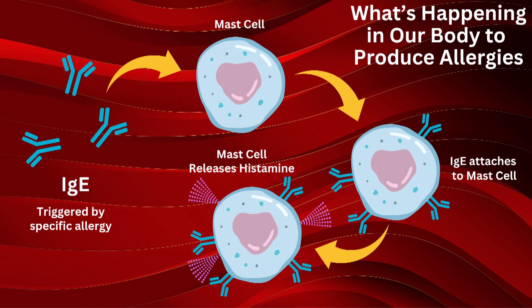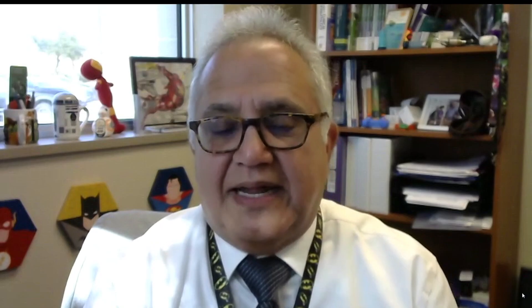For example, histamine, which can trigger sneezing and itching. But it also releases a whole bunch of mediators that are going to trigger an immune reaction in your body, or inflammation in your body.